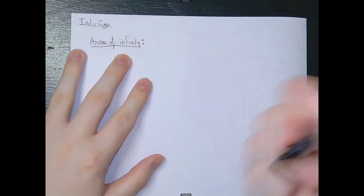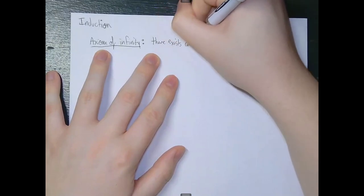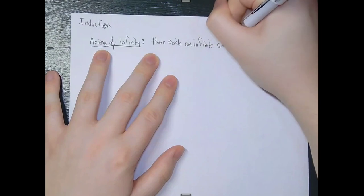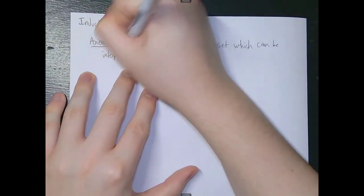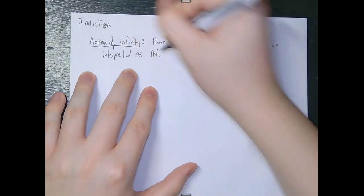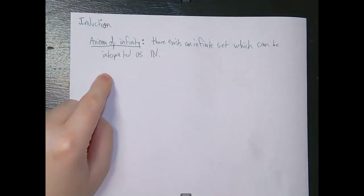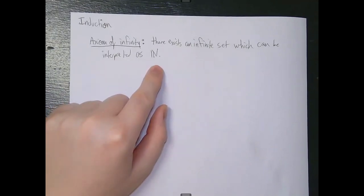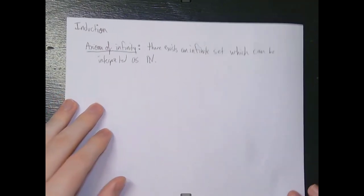This is actually the first examples of axioms that we've seen for this entire class, so let's take a look at some of them. First we can talk about the axioms of infinity. Remember that an axiom is a type of theorem, so the axiom of infinity states that there exists an infinite set, which can be interpreted as the set of natural numbers.